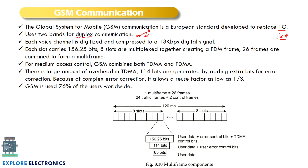As seen in the previous video, 2G uses digital communication where the voice is transferred as a digital signal. The voice channel is digitized and compression techniques are introduced in 2G. The data is compressed to a 13 kbps digital signal, that is 13 × 1000 bits per second. So 13 kbps is the compressed version of the voice signal.